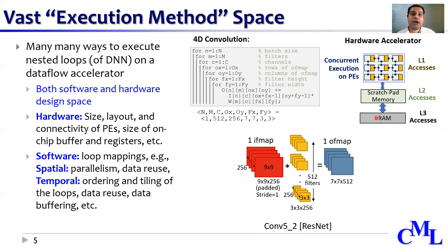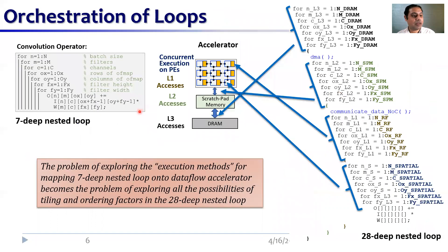It also corresponds to different hardware configurations — we need to find out efficiency when we vary the execution by means of different numbers of PEs, different sizes of memories, or when their connectivity and organization changes. In other words, we can imagine expanding a seven-deep nested loop of convolution into a 28-deep nested loop, where different tiling and orderings of these multi-tiled loops correspond to spatial parallelism — concurrent execution on PEs — and accessing data from local PE memory, shared memory, and off-chip memory. So we need automatic and quick exploration for optimizing this multi-tiling of loops to find efficient execution methods.